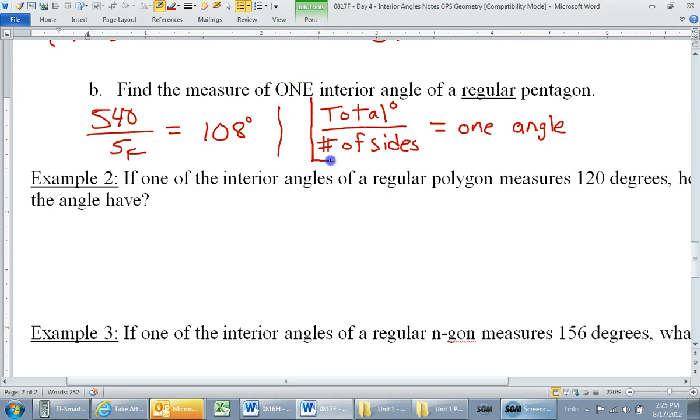Okay, so let's keep this as a formula in the back of our minds because we're about to need it. If we have the total degrees divided by the number of sides, that should give us one angle.